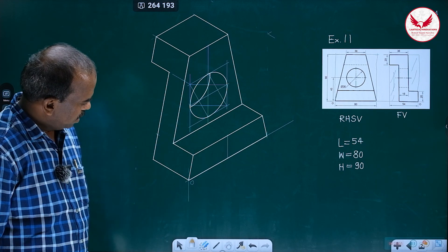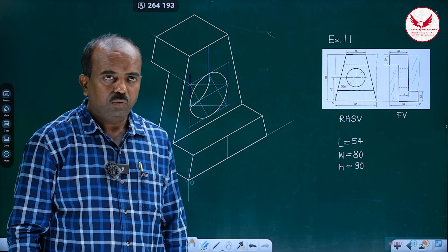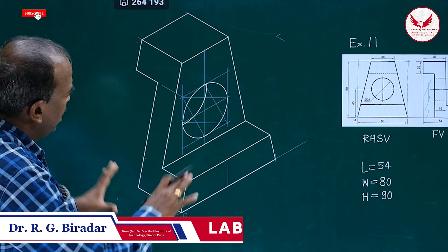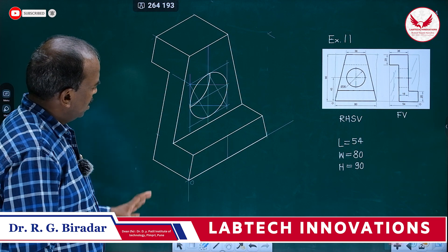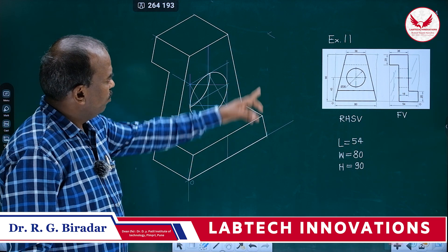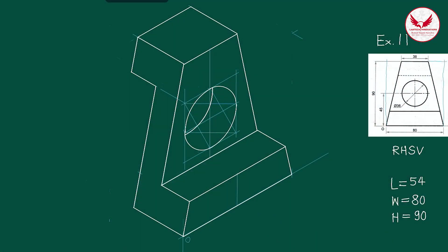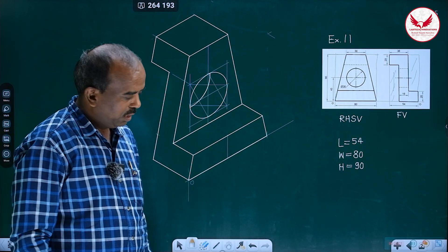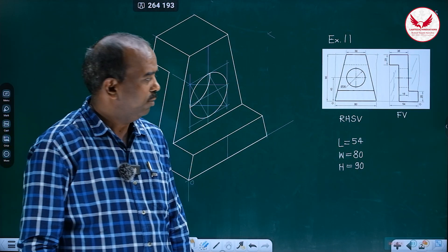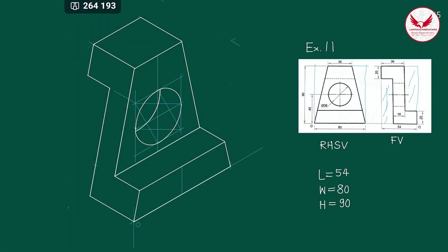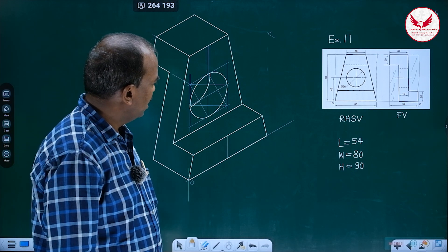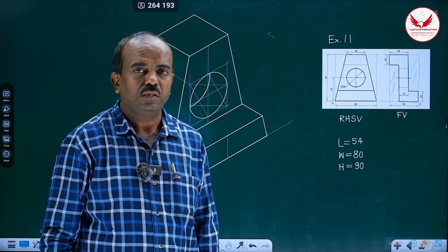So it is the isometric view of this given object. Here, actually, the box is completely removed. So if you have to give the dimensions for this object, then again roughly we have to draw the box and for that box give the dimensioning — because if we don't remove the box, you will find this problem difficult. While drawing, if you are removing the line, it is always better. So it is the isometric view of these two orthographic views. I hope that you will like this procedure of solving this example. Thank you.